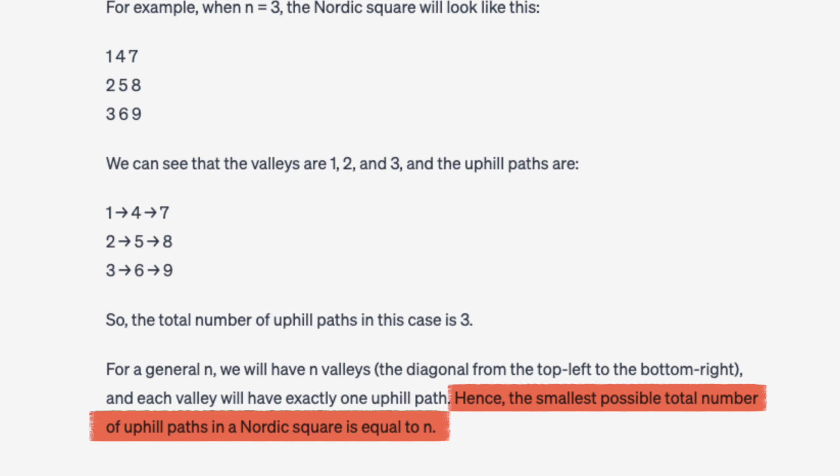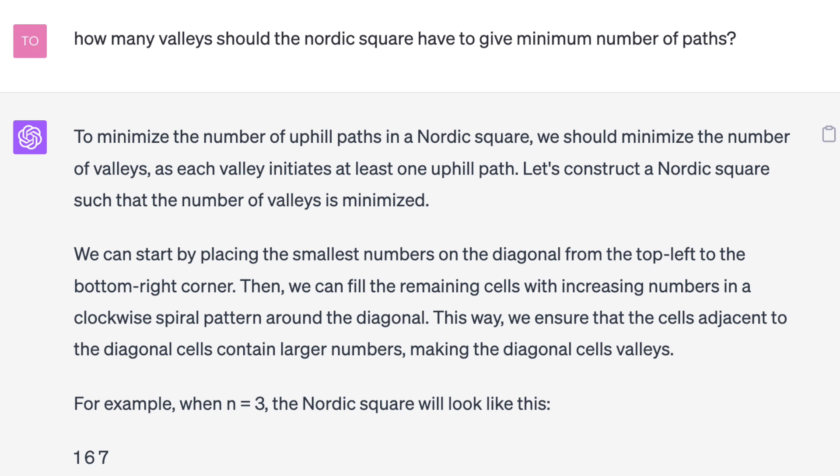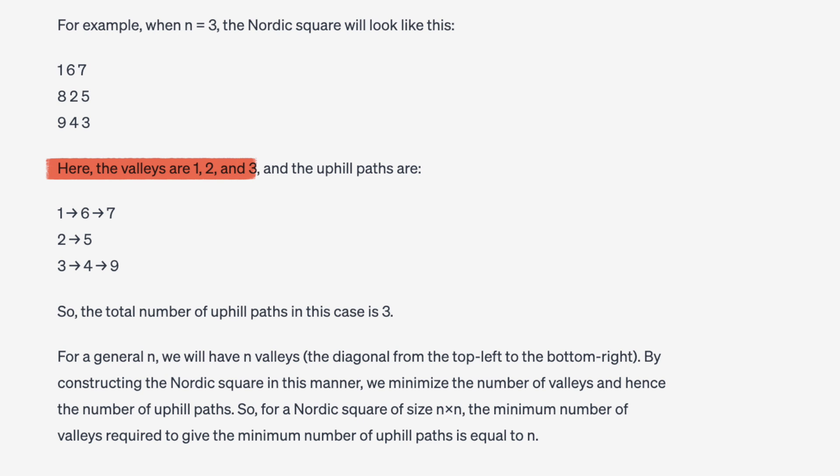It says that the smallest number of paths is equal to n. I asked it how many valleys there should be to minimize the number of paths, and it immediately gives a square with three valleys. It says that the minimum is n valleys, which gives n paths. And if you remember, recognizing that there must only be one valley is key to getting the solution.